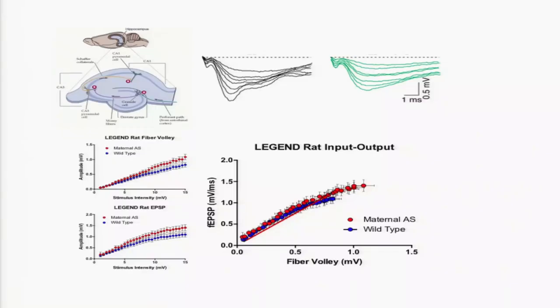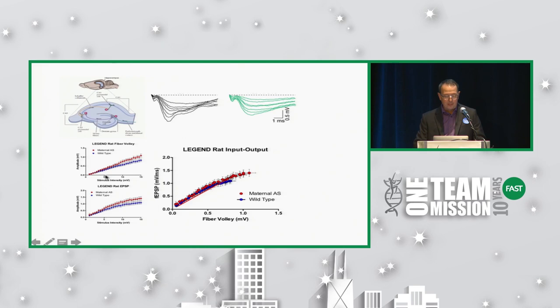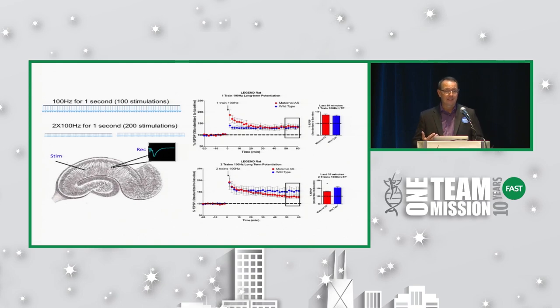The first thing we look at is synaptic transmission. We give a stimulus at a really low level and then see what the response looks like. As we give increasing stimulations you can see that our output gets larger and larger. We can make measurements on what's called an excitatory post-synaptic potential — this is communication — and from that we can discern how well the pre-synaptic and post-synaptic neurons are talking to each other. There is a difference in communication in our AS LEGEND rat versus our wild type littermate controls.